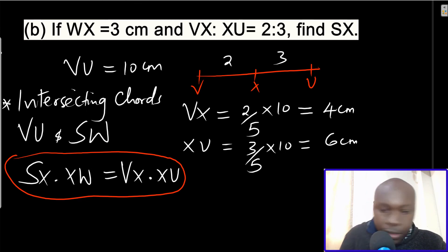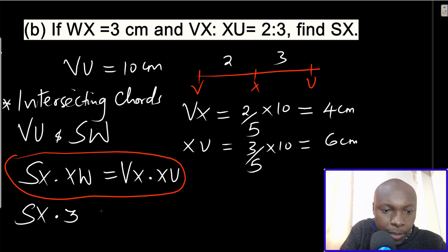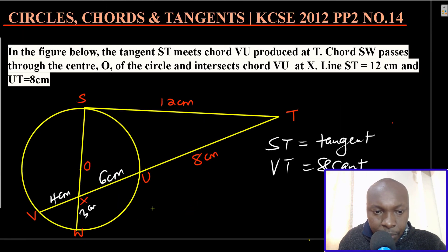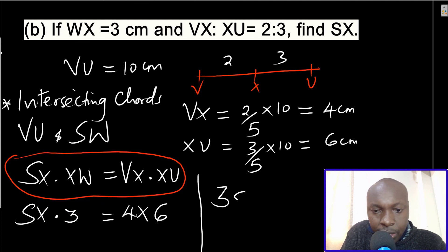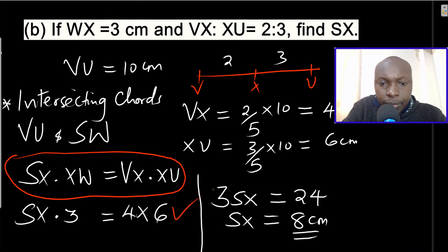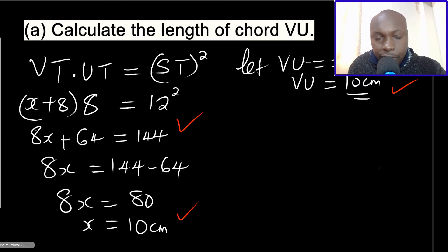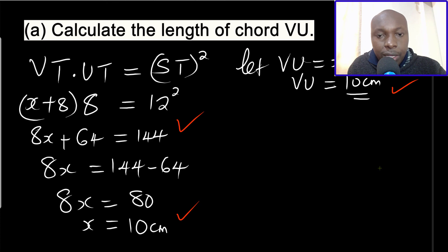Substituting values: SX is what we are looking for. XW equals WX which is 3. VX equals 4 and XU equals 6. So SX times 3 equals 4 times 6, giving 3·SX equals 24. Dividing both sides by 3, SX equals 8 centimeters. That is how to solve this question — the first part using the tangent-secant property, and the second part using the intersecting chords property. Thank you.